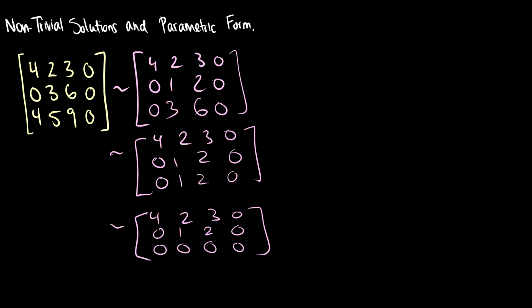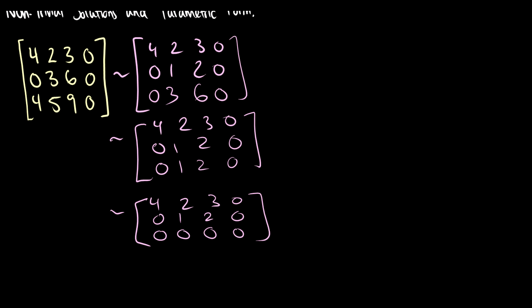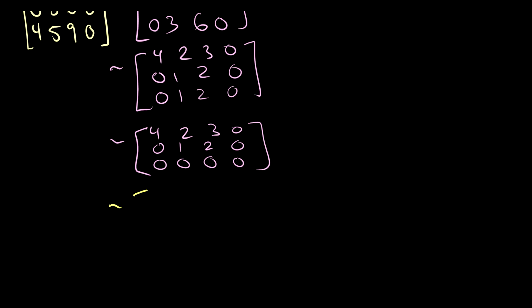So what's our solution here? Well, we have that 4x1 plus 2x2 plus 3x3 is equal to 0. And we really don't want this x2 in this equation. So we're going to have to do something with this. So let's very quickly take row 1 and subtract 2 of row 2. So we're going to get 4, 0, negative 1, 0.